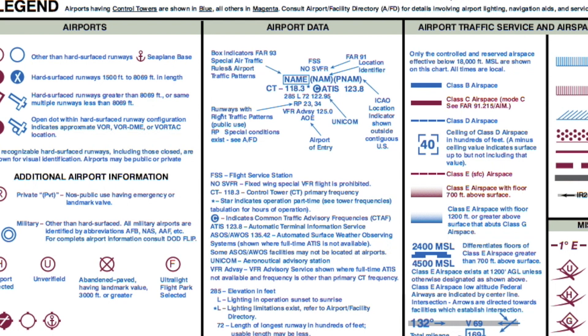What can sometimes be confusing is that UNICOM and CTAF can be the same frequency, but they actually don't have to be — they can also be separate frequencies. To identify the correct CTAF radio frequency, you're going to be looking at the C that's within a circle. The color of it is actually going to mirror whatever the airspace color is — so if it's class B or class D, it's going to be blue, and if it's class C or class E, it's going to be magenta, because those are the colors that represent those airspace types.